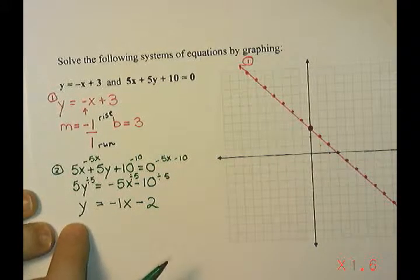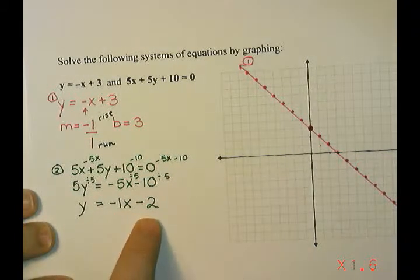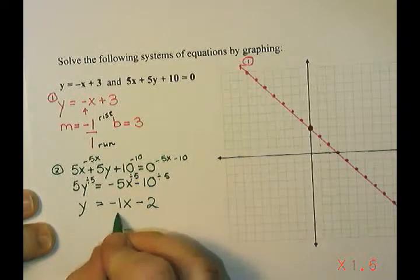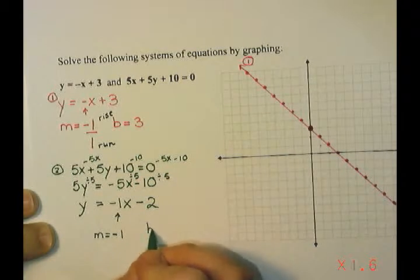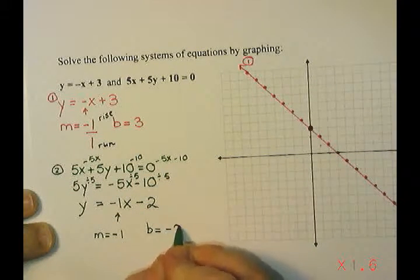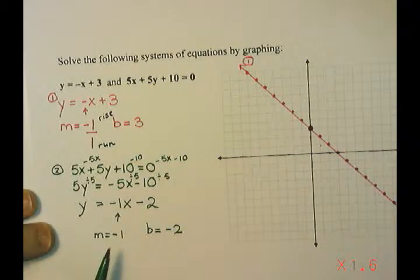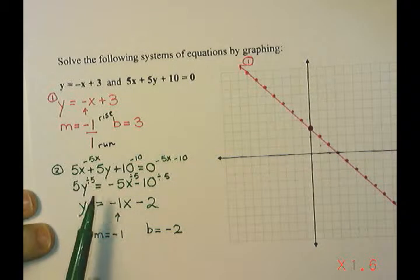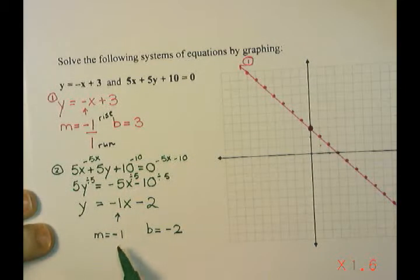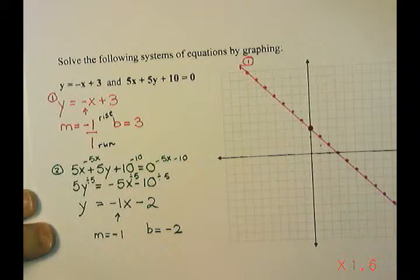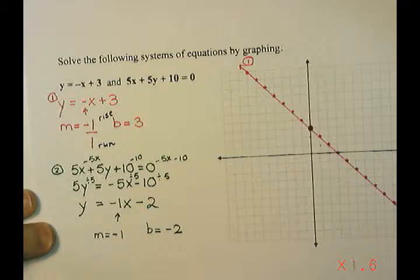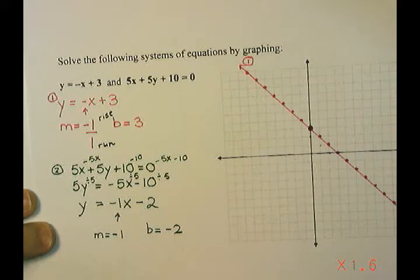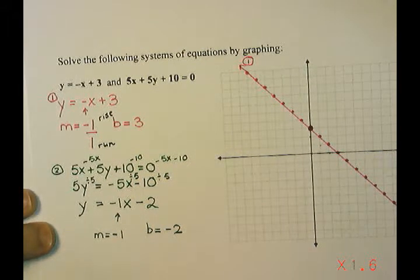So we have the line y equals negative 1x minus 2. So this one has a slope of negative 1 and a y-intercept of negative 2. Now I do notice that negative 1 and negative 1, that the slopes of these two lines match. And I do remember that if the slopes of the two lines match, that means they are parallel. But we are going to graph it and then we'll take a look and see what that means.